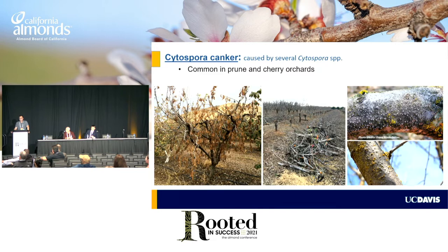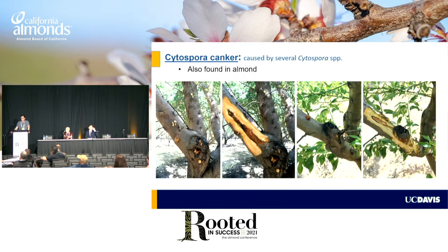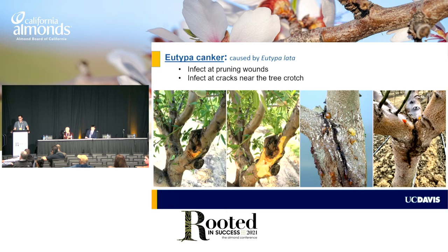Cytospora canker: if you're in the Sacramento Valley and if you're aware of prune and cherry orchards being in the area, Cytospora canker is a really aggressive canker disease, mainly in prune and cherry — it's definitely a limiting factor for prune production in California, very devastating. In almond, we have found it in various regions mainly up in the Sacramento Valley, but in that case those cankers are more elongated with less gumming, elongating within the scaffold and initiating at a pruning cut.